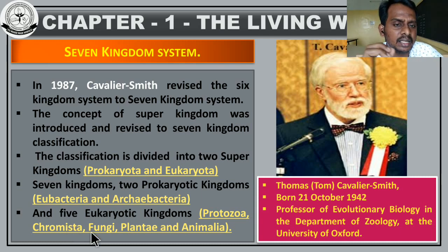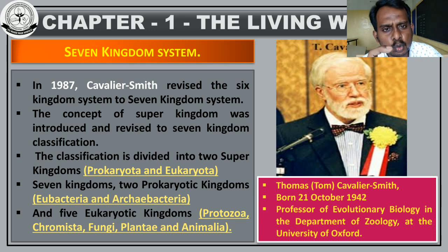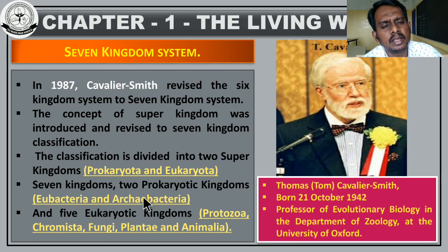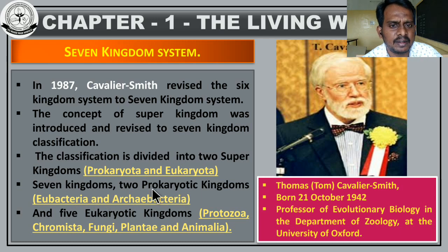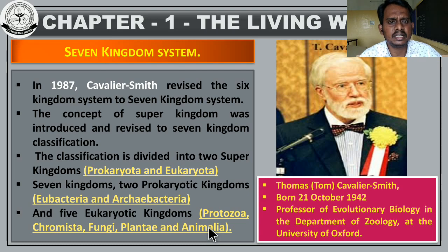All plants and all animals are also included among the eukaryotic organisms. So Cavalier Smith classified organisms into two super kingdoms — prokaryotic and eukaryotic. Prokaryotic includes Eubacteria and Archibacteria. Eukaryotic organisms are classified into five categories: Protozoa, Chromista, Fungi, Plantae, and Animalia. That is the seven kingdom classification.